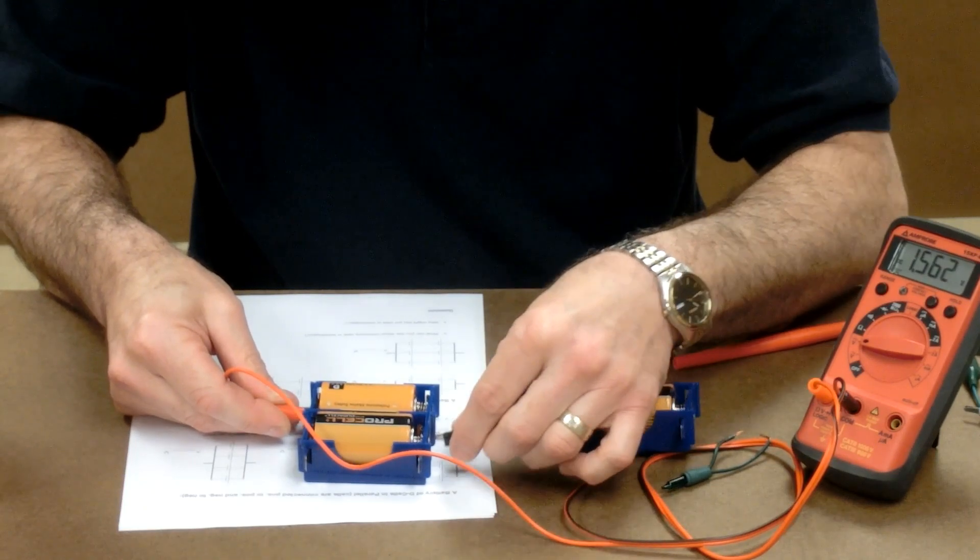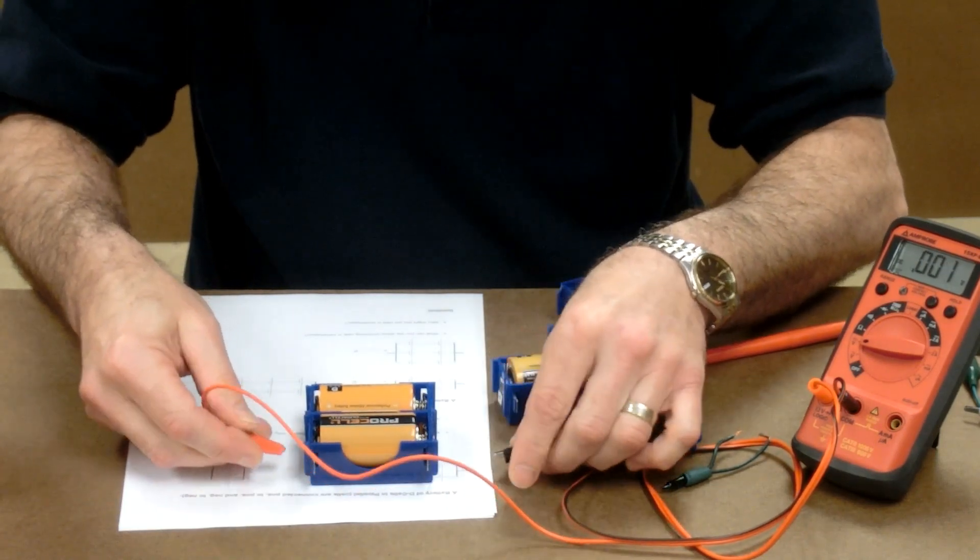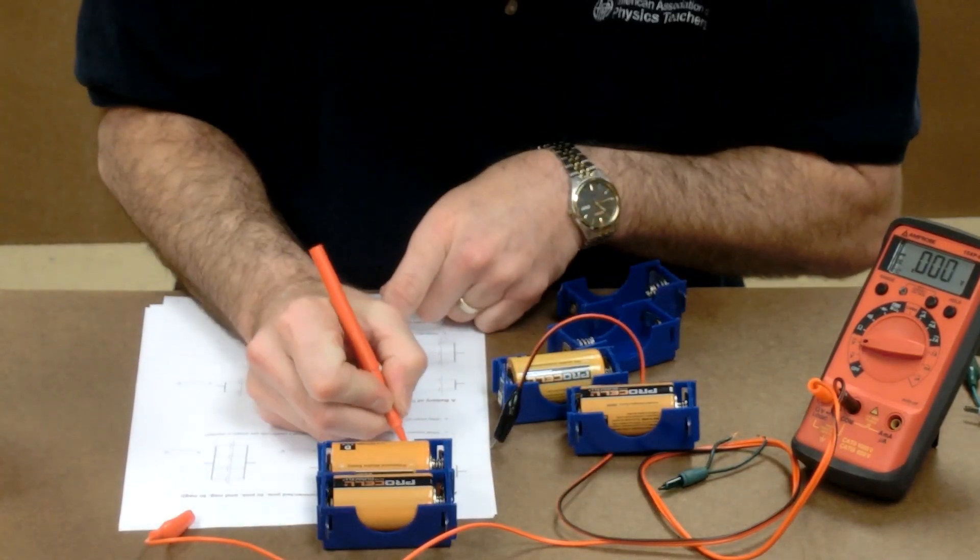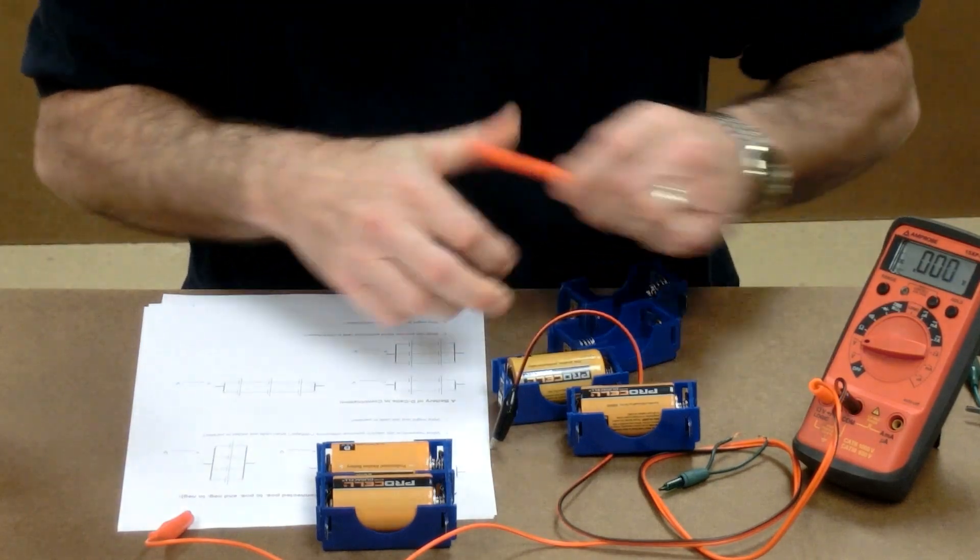1.56. It doesn't matter where you place the meter as long as the positive's on the positive side and the negative's on the negative. So that's 1.56 volts for two.